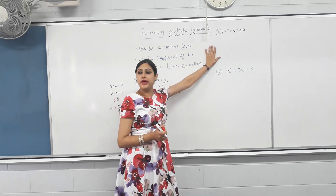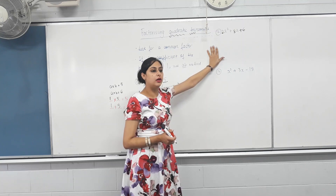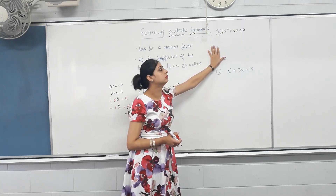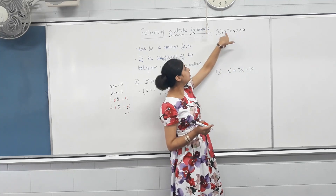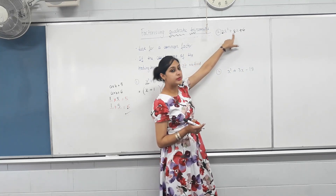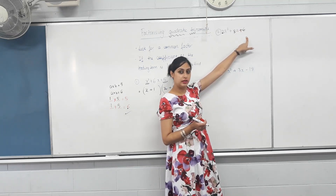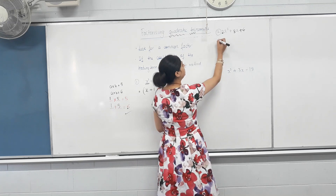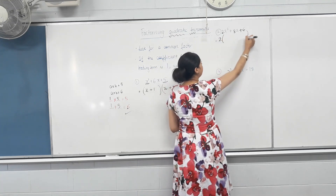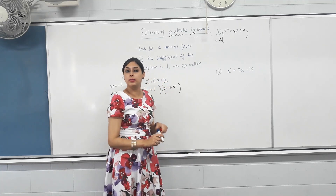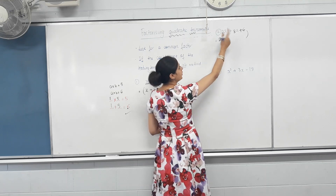Next one. Look for a common factor — is there a common factor? Yes. What is the common factor? Not A, because this term doesn't have A. Two. Does two go into two? Yes. Is eight divisible by two? Yes. Is six divisible by two? Yes. So we have a common factor. We take our common factor out and then divide every single term inside the bracket by that common factor. Two divided by two is one, so A-squared remains. Eight divided by two is four, plus. Six divided by two is three.